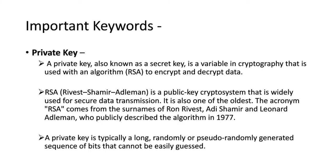The first keyword is private key. A private key, also known as a secret key, is a variable in cryptography that is used with an algorithm — RSA — to encrypt and decrypt data. RSA stands for Rivest–Shamir–Adleman and is a public-key cryptosystem that is widely used for secure data transmission. It is also one of the oldest such systems.